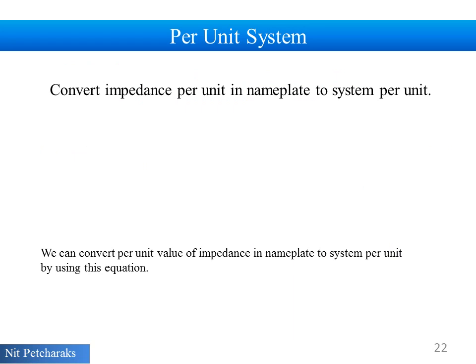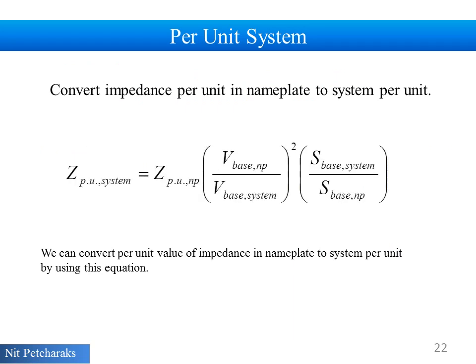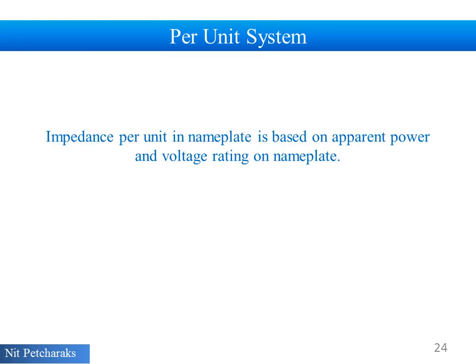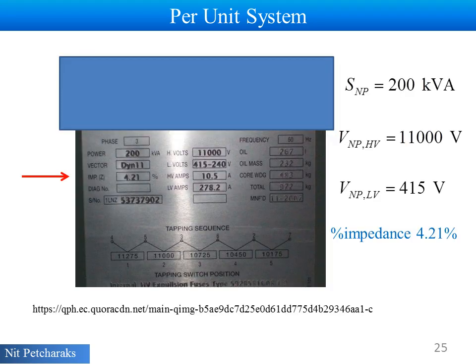We can convert per unit value of impedance in nameplate to system per unit by using this equation. This is example of nameplate of transformer rating. Per unit value of impedance in nameplate is based on apparent power and voltage rating on nameplate. The percentage value of impedance is 4.21.